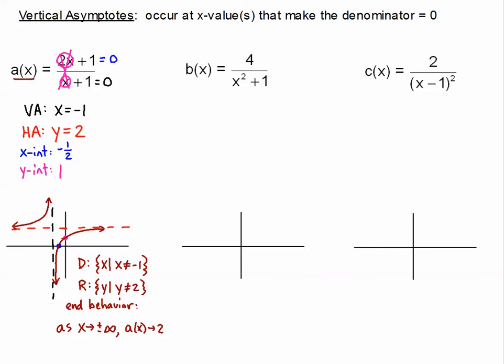Let's look at our second example, b of x, in the same order. First, I set my denominator equal to 0. When I subtract 1, I get x squared equals negative 1. That's obviously very confusing because we cannot square a real number and get negative 1. So in this case, there are no vertical asymptotes — there's nothing that would make the denominator equal to 0.